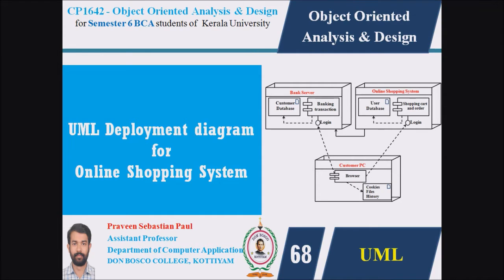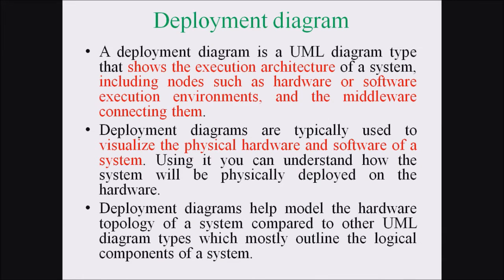We are discussing the UML Deployment Diagram for an Online Shopping System. As we mentioned in the previous lecture, a UML Deployment Diagram is a type of behavioral diagram that shows the execution architecture of a system and includes nodes such as hardware or software execution environments and the middleware connecting between them. Deployment Diagrams are typically used to visualize the physical hardware and software of a system, helping us understand how the system will be physically deployed on hardware.